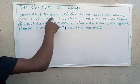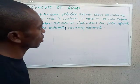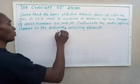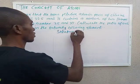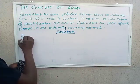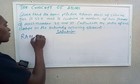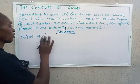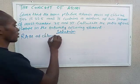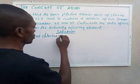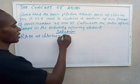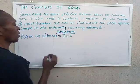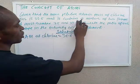We have this question here. Given that the mean relative atomic mass of chlorine gas (Cl2) is 35.5, and it contains a mixture of two isotopes of mass number 35 and 37.